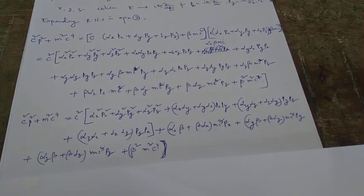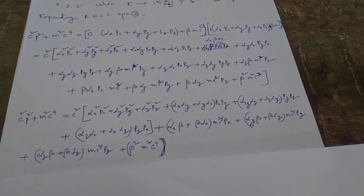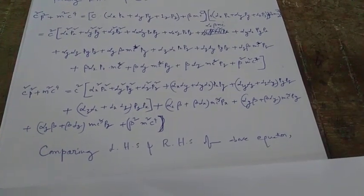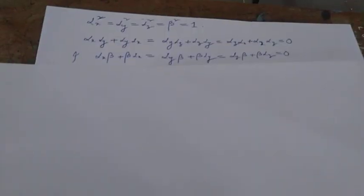Taking the commutator between αᵢ's and pᵢ's as zero, and knowing that the commutation between any pair of pₓ, pᵧ, pᵤ is also zero, we can compare the left-hand side and right-hand side of this equation.